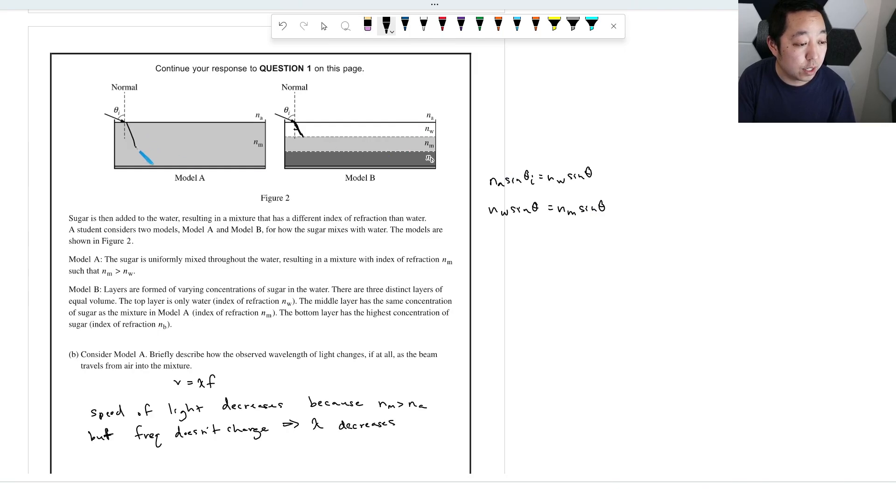So theta 2, theta 2, theta 3. And then again, it goes through this one, and you have a similar thing. NM sine theta 3 is going to equal NB sine of theta 4. So all of them are related, so therefore this just equals that one. NA sine theta I equals NB sine of theta 4.